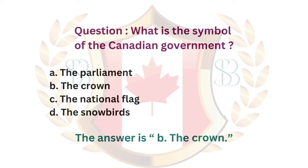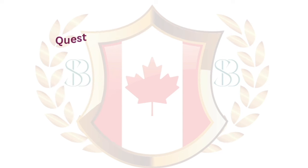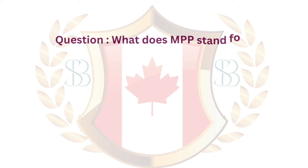Question. What is the symbol of the Canadian government? a. The Parliament. b. The Crown. c. The National Flag. d. The Snowbirds. The answer is b. The Crown.